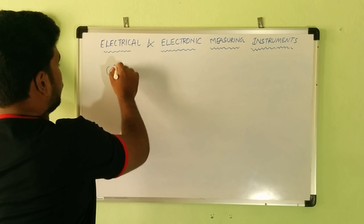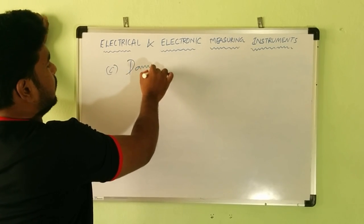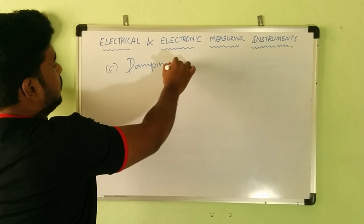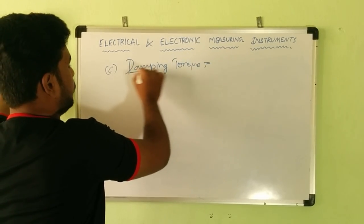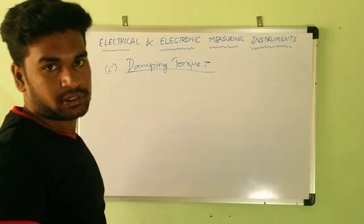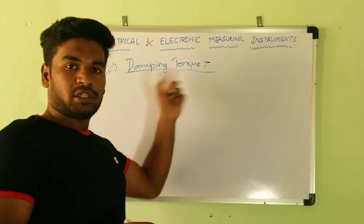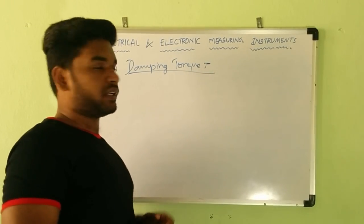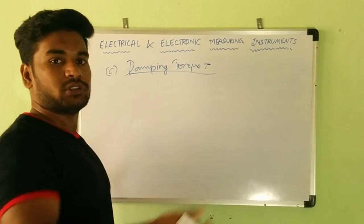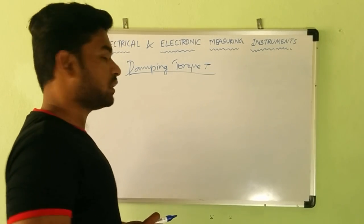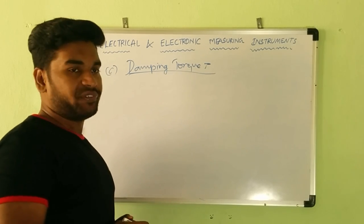The final torque we have to obtain is the damping torque — the friend damping torque. Just like when two friends are fighting and a third friend steps in to control them, similarly when the control torque and deflecting torque are fighting, the damping torque steps in. Hence we get the damping torque: it controls vibrations of the moving system.